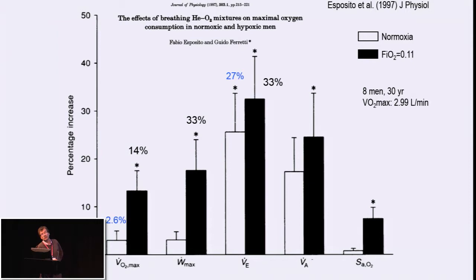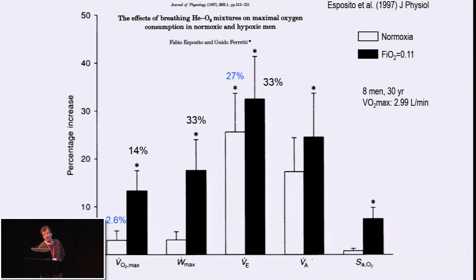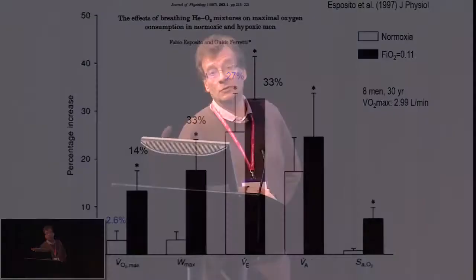When breathing helium-oxygen at sea level, ventilation increased by 27%, impacting alveolar PO2. However, because hemoglobin saturation is already very high at maximal exercise at sea level, there is very little improvement in saturation, and consequently VO2max is barely changed — a non-significant 2.6% increase. But at 5,000 meters above sea level, ventilation increased even more, by 33%, and VO2max improved substantially by 14%, because hyperventilation genuinely improves saturation at altitude.